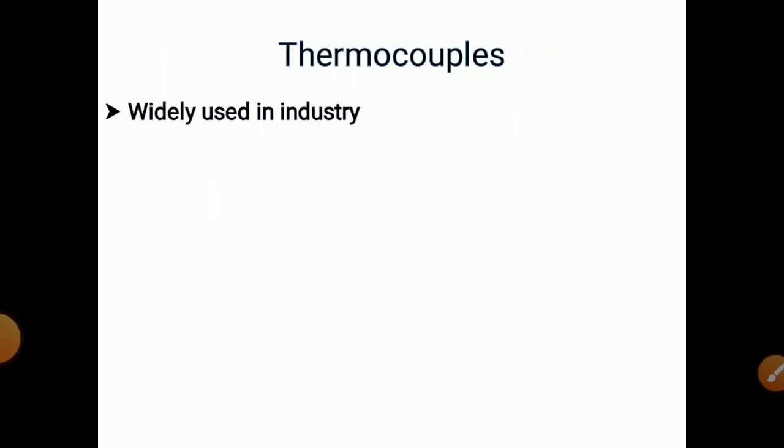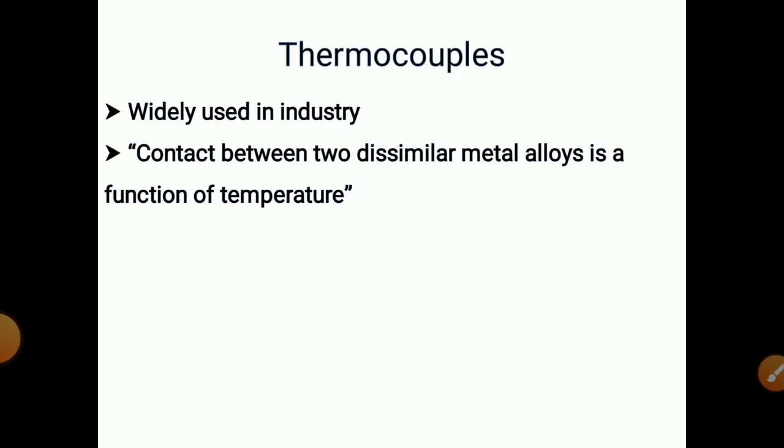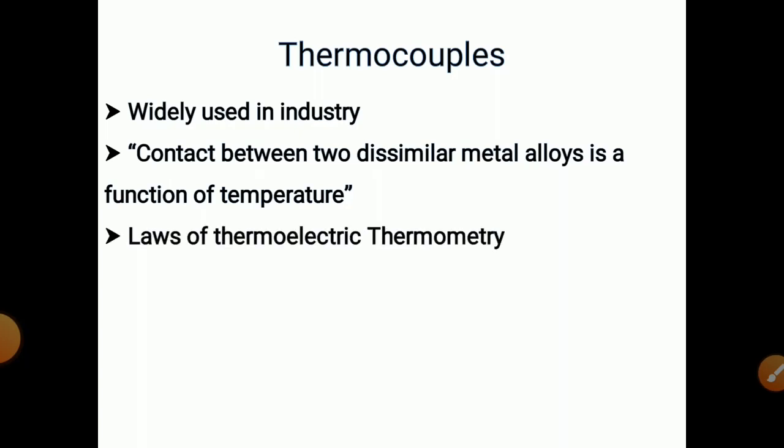What is a thermocouple? A thermocouple is widely used in industry. The contact between two dissimilar metal alloys is a function of temperature. A thermocouple is prepared with two dissimilar metal wires, and as temperature increases, the output voltage increases — an EMF is generated as a function of temperature. The thermoelectric principle is used here.